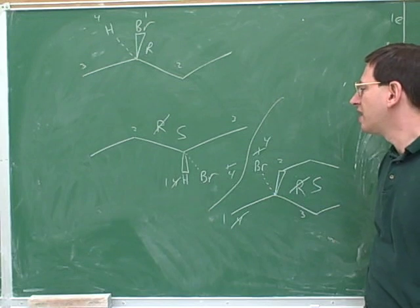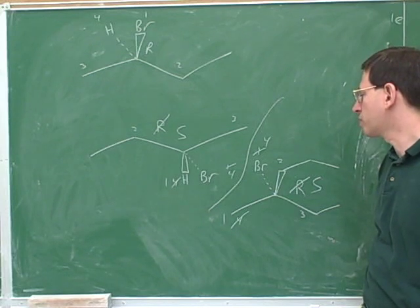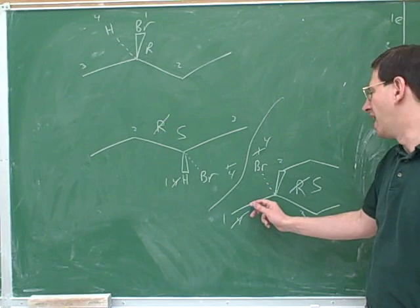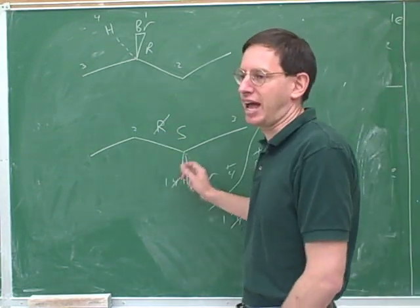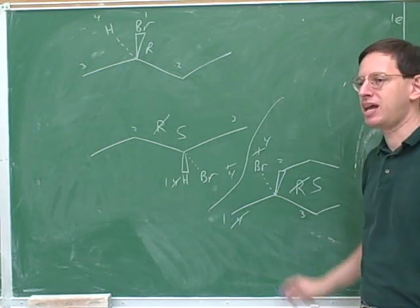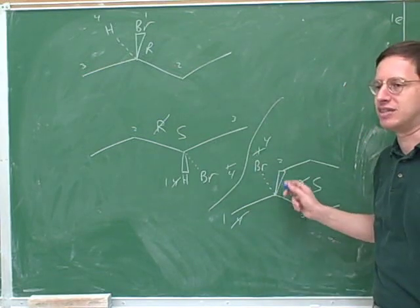And also, a lot of people get messed up when the number four priority is in the plane of the page. Here the number four was easy because it was on a wedge or a dash, but people get messed up when it's in the plane of the page. But the method that we use works in both of these cases.